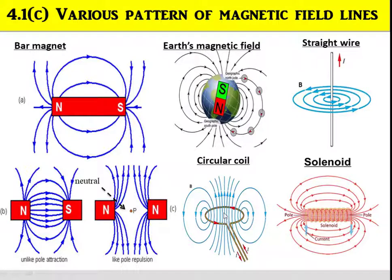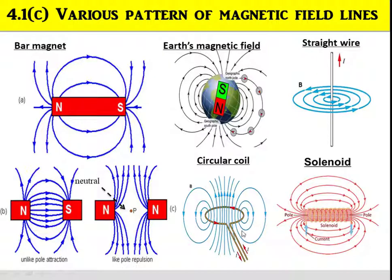There are various patterns of magnetic field lines. For example, the bar magnet, and this is an example of the Earth's magnetic field. This is a pattern for the magnetic field lines around a straight wire. This is a pattern for unlike pole attraction, and this is a pattern for unlike pole repulsion — at point P here, it is a neutral point. This is the pattern for a circular coil, and this is an example of the magnetic field lines for a solenoid.